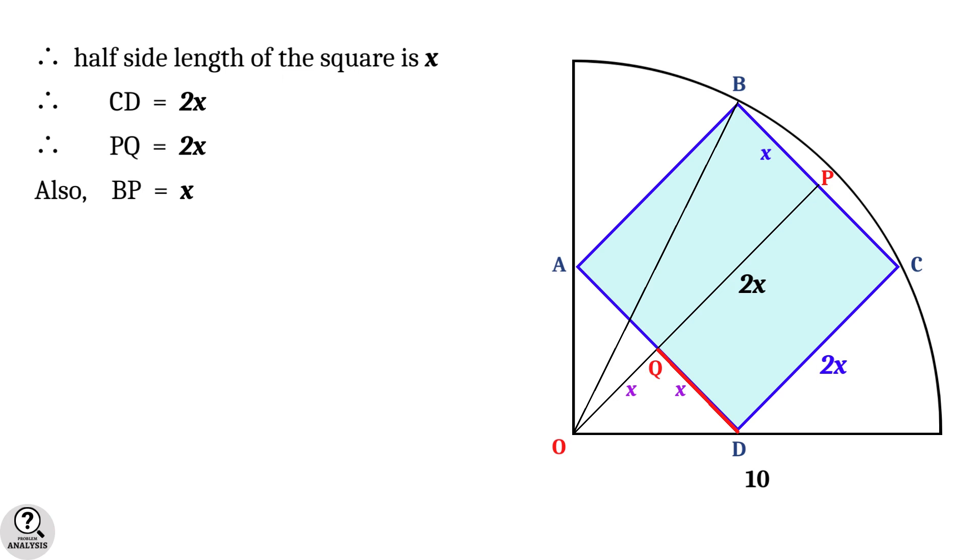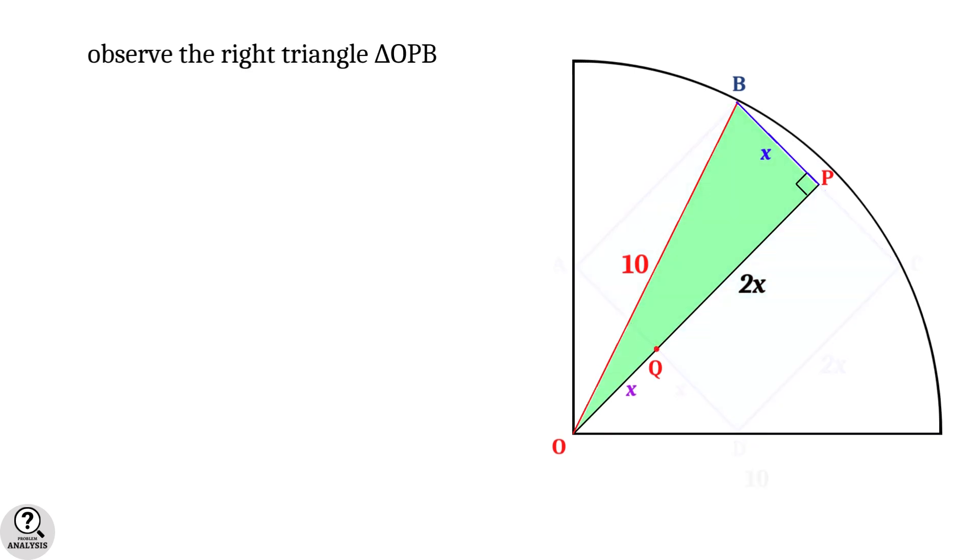We already have that line OB is a radius of the quarter circle, that is, OB equals 10 units. Now observe the right triangle OPB. OP equals 2x plus x equals 3x units. Also we have BP equals x and OB equals 10.